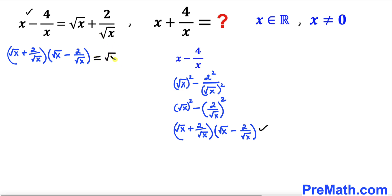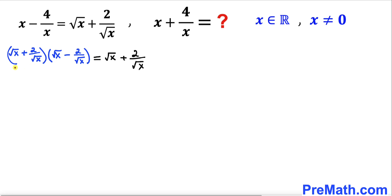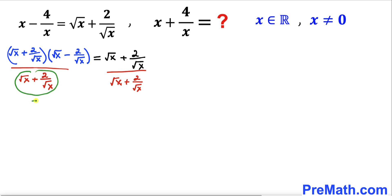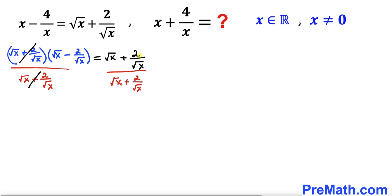I have replaced the left hand side with that factored form and it equals (√x plus 2/√x) on the right hand side. Our next step: let's divide both sides by (√x plus 2/√x). We know that (√x plus 2/√x) is not equal to zero. This term cancels out on both sides, so on the left hand side we are left with simply (√x minus 2/√x).